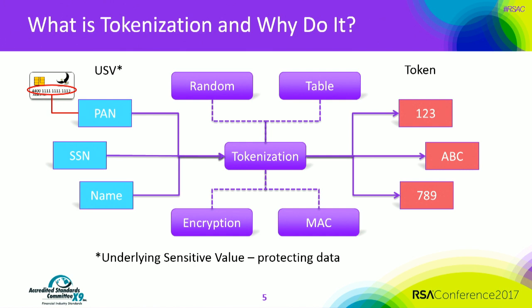So how can we use this? Why do we even do this? In our slide, you'll notice we have a PAN, primary account number. We also have other data like the social security number and a person's name. These can all be USVs — underlying sensitive values — that you want to protect. Using a number of different methods, you can tokenize them and end up with something numeric, something alphanumeric, or some combination of the two. The USV is kind of like the clear text in cryptography. The mapping is typically format-preserving but does not have to be.